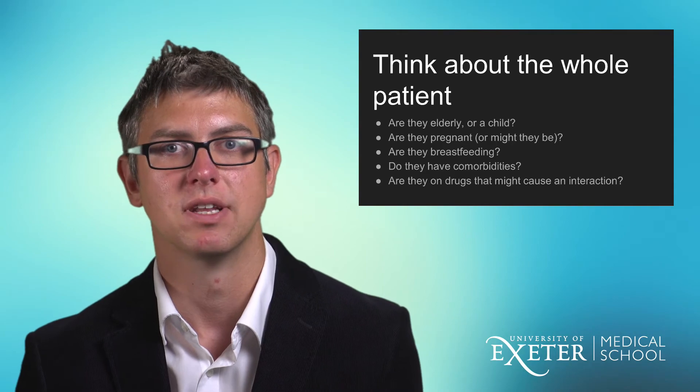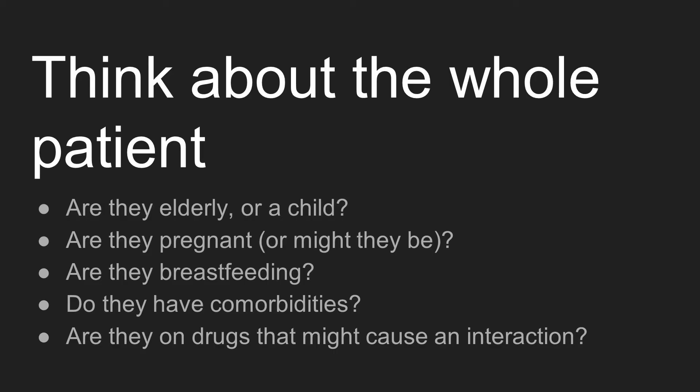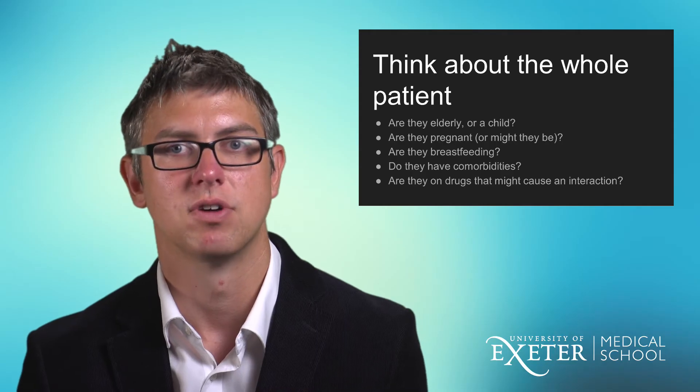It's really important to think about the whole patient. With an elderly patient you might need to start at a much lower dose than you would in an adult of working age and increase more gradually. If you've got a child, you'll need to reduce the dose according to their weight and age. If your patient is pregnant or at risk of becoming pregnant, that's very significant — some psychiatric drugs are teratogenic. If the patient is breastfeeding, that needs to be taken into account as some drugs are expressed in breast milk and can be ingested by the baby. You also need to consider the patient's comorbidities — renal failure and liver failure can both be significant — and whether there are any other drugs that might cause an interaction.